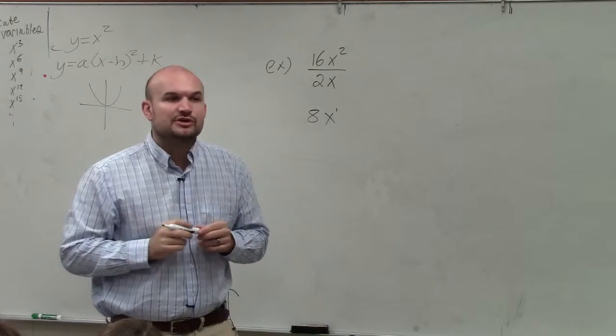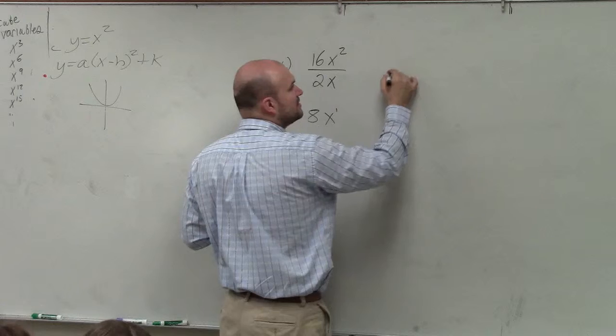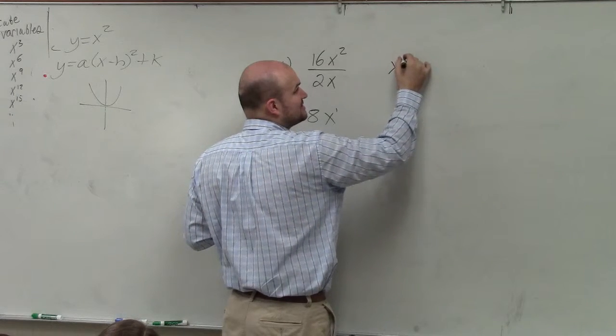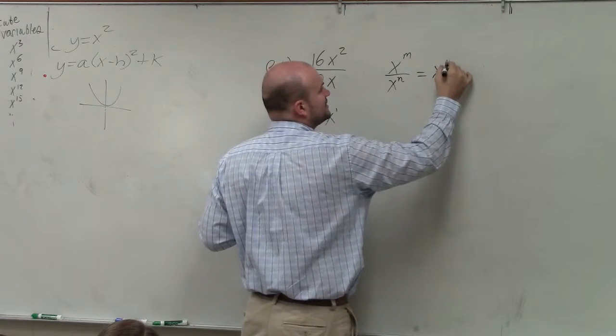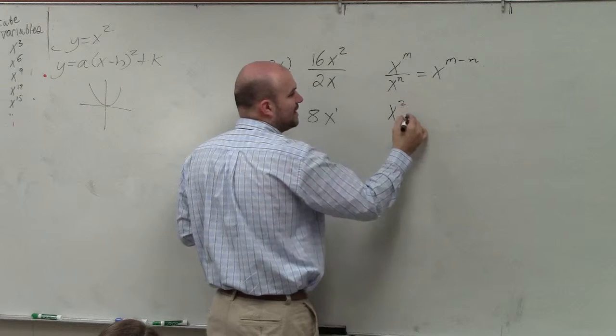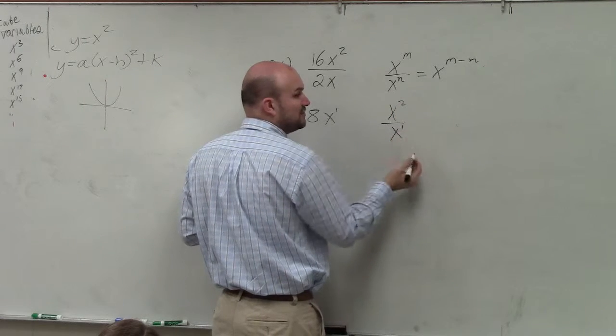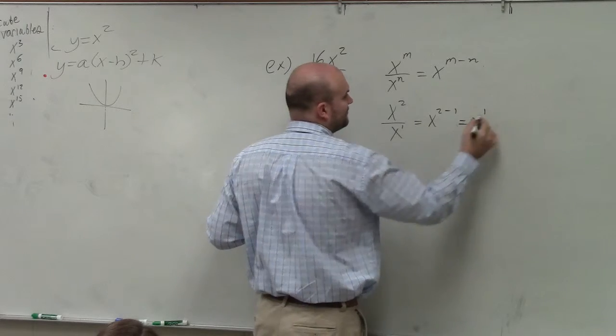Please remember when you're doing division with variables, the rules of exponents state that when you have x to the m divided by x to the n, you simply subtract the powers. So if you have x squared divided by x to the first power, that's simply x to the 2 minus 1, which is x to the first.